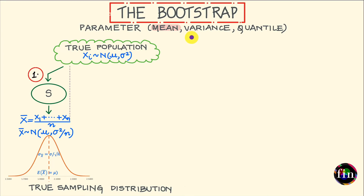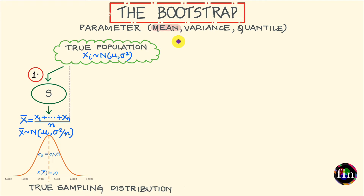In this video, we will be talking about a very simple but still a very powerful statistical technique called the bootstrap. Let us say we have a population and we are interested in some parameter associated with our population. This parameter can be the population mean, it can be the variance, it can very well be a quantile such as the median. To keep things simple and digestible, let us focus on the population mean. All the results we arrive at can be cross-applied and extended for other chosen parameters of interest.